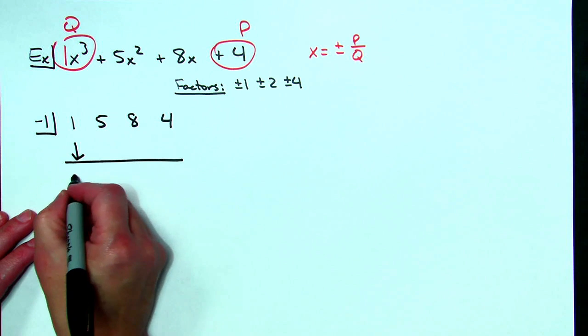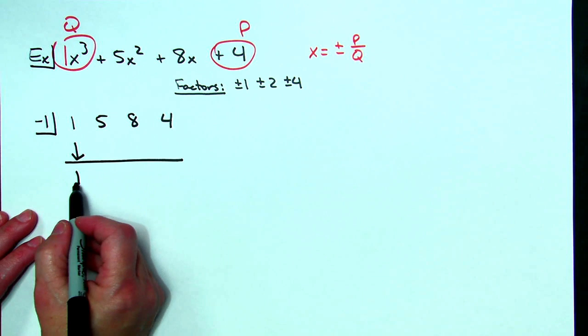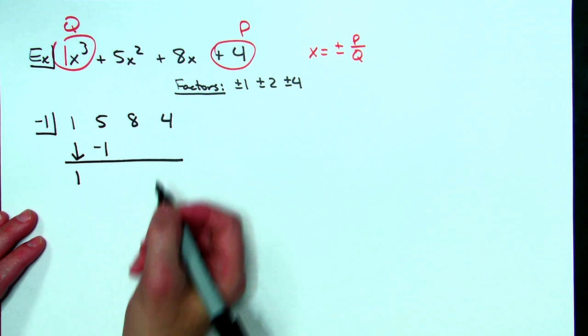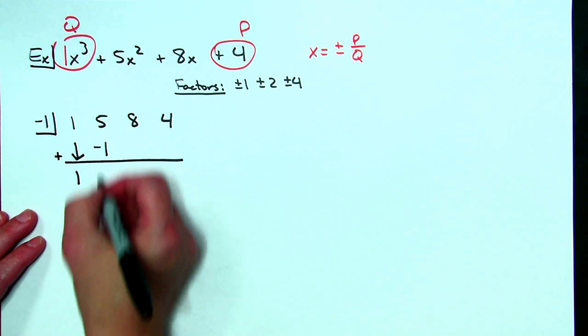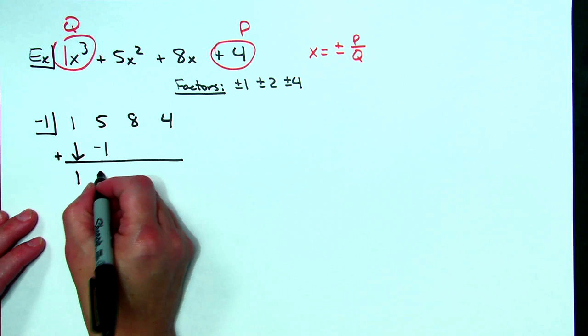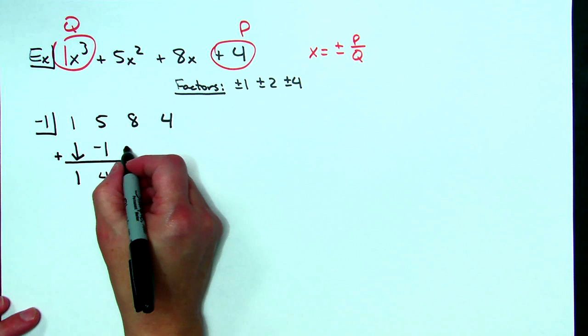If you recall synthetic division this one is going to come straight down and then I'm going to multiply one times negative one is negative one. We always add going down, five plus a negative one is four, four times negative one is negative four.